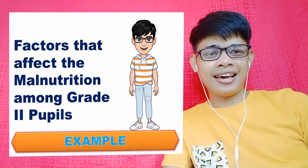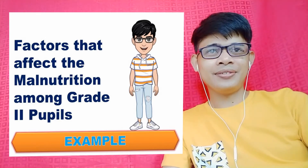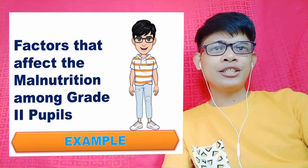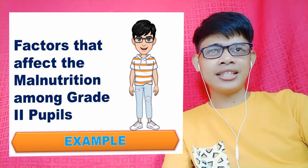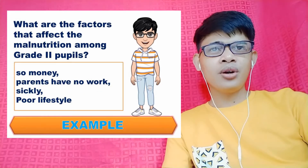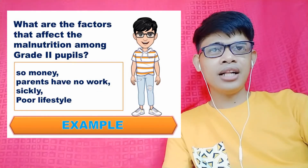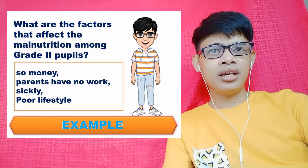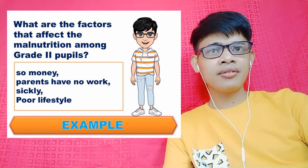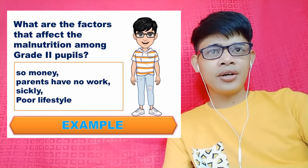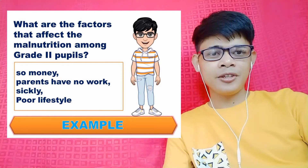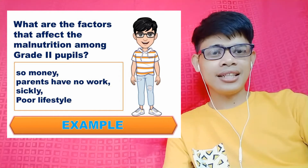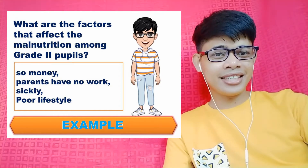Here's another example. We have a research title: 'Factors that affect the malnutrition among grade 2 pupils.' Converting this into a question: 'What are the factors that affect the malnutrition among grade 2 pupils?' The possible answers would be: no money, parents have no work, the pupils are sickly, or they have a poor lifestyle. In that case, we can say that the research title is qualitative in nature because the answers are in words and not expressed in numbers.